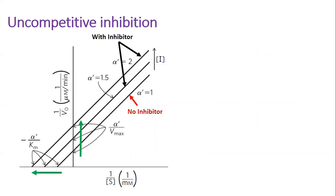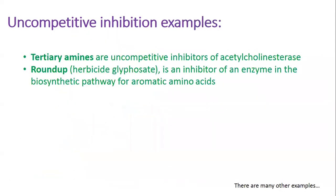Tertiary amines are uncompetitive inhibitors of acetylcholinesterase. The herbicide glyphosate, also known as Roundup, is a non-competitive inhibitor of an enzyme in the biosynthetic pathway for aromatic amino acids.